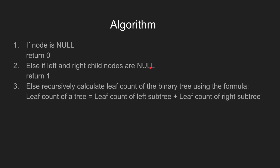The algorithm to calculate the leaf node count for a binary tree is very simple. First of all, if the node is null, we simply return 0.